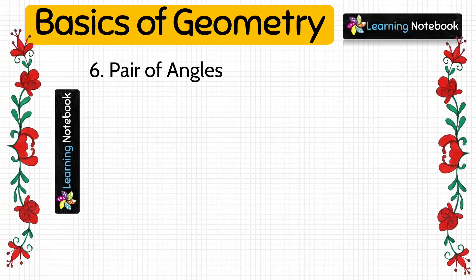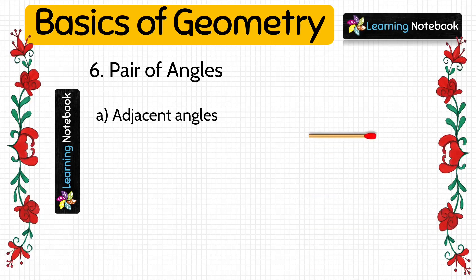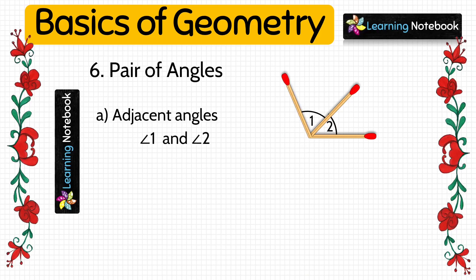Next we have pair of angles. The first one is adjacent angles. Two angles are adjacent angles if they have a common side and a common vertex. Let's represent adjacent angles by pasting three matchsticks as shown here, where angle 1 and angle 2 are adjacent angles.